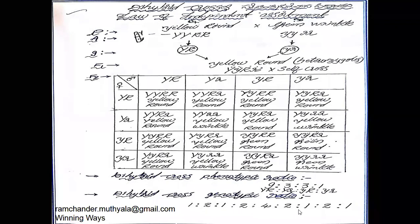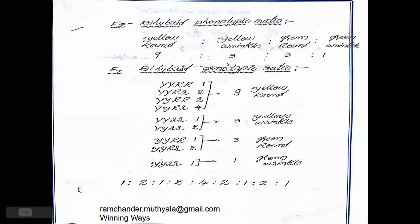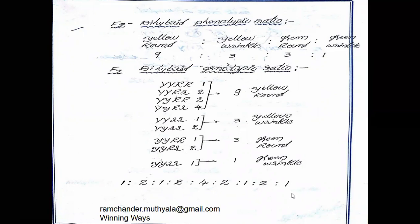The genotypic ratio of the F2 generation is 1:2:1:2:4:2:1:2:1, arranged from dominant to recessive position. The phenotypic ratio is 9:3:3:1. This is the dihybrid cross, also known as the Law of Independent Assortment — the second law of Mendel.